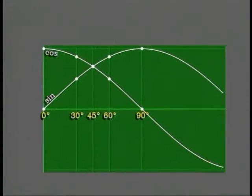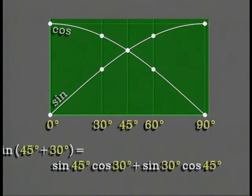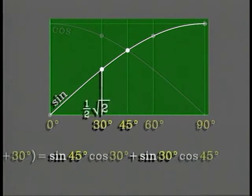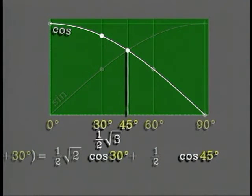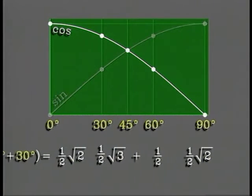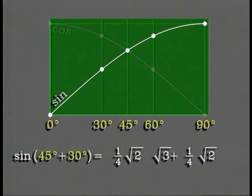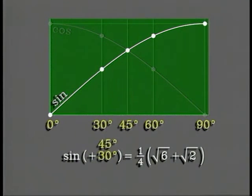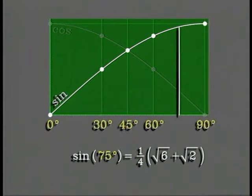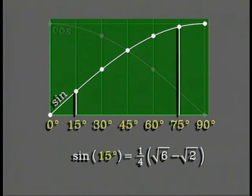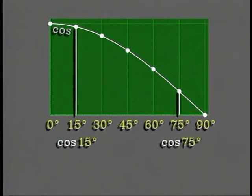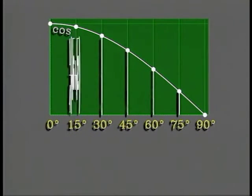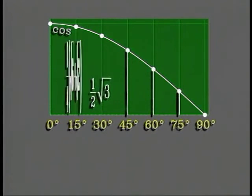The addition formula enables us to use the sine and cosine of two angles to find the sine of their sum. Using the sine and cosine of 30 degrees and 45 degrees, we can find the sine of their sum, which is 75 degrees. And the subtraction formula gives us the sine of 15 degrees. These are also the cosines of the complementary angles. All these are exact values expressed in terms of square roots of whole numbers.